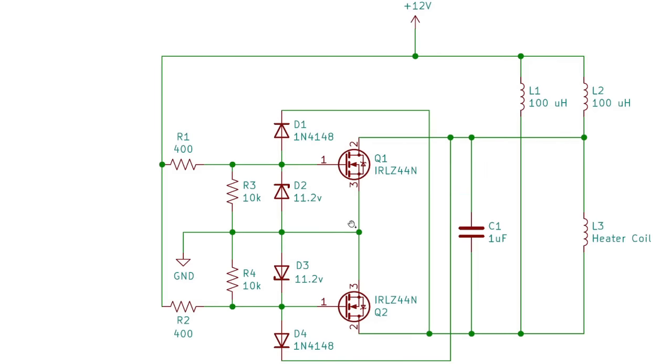This cycle will repeat itself naturally and turn the MOSFETs on and off at the resonant frequency of the LC circuit. Because the oscillation is happening at resonance, the circuit is extremely efficient.